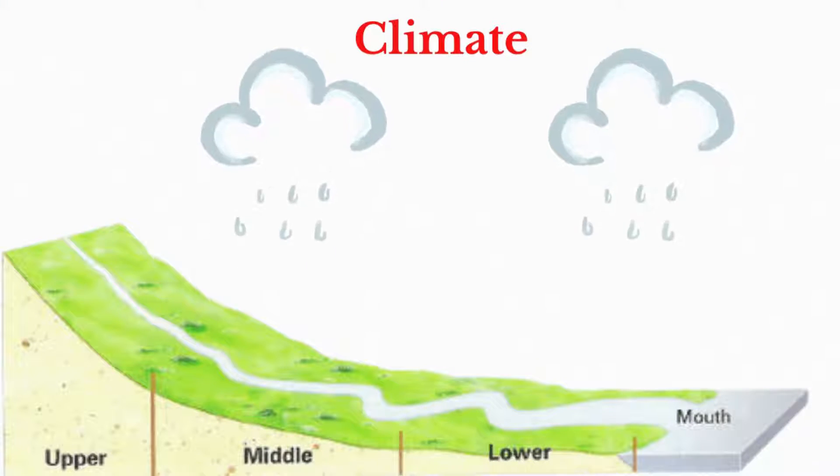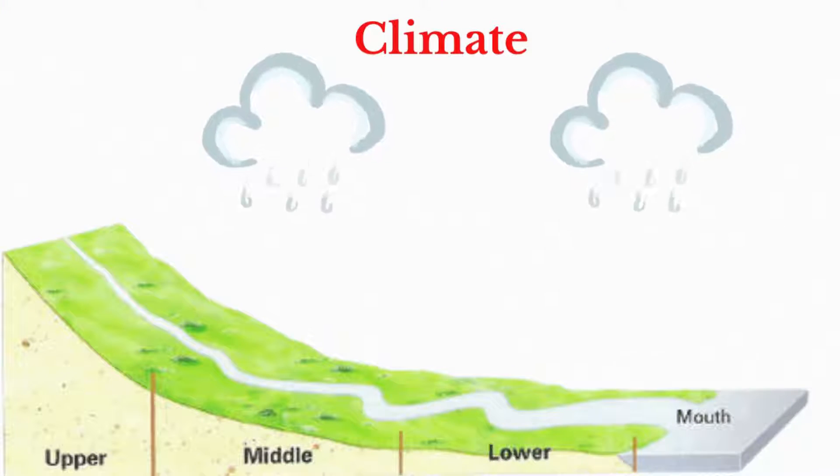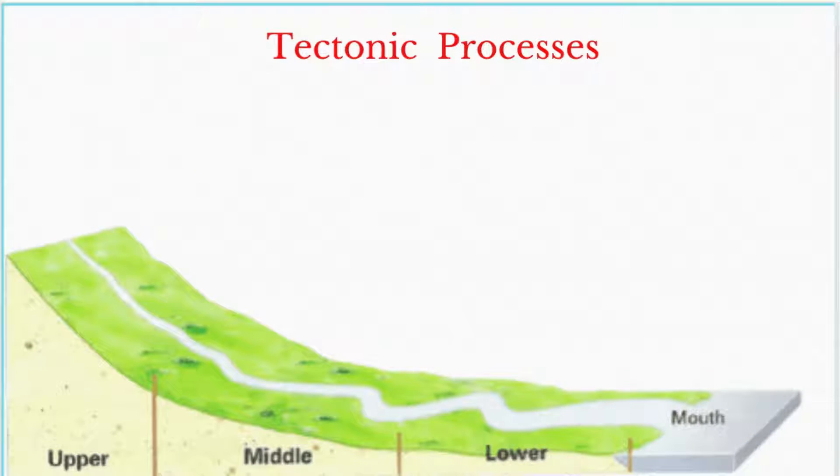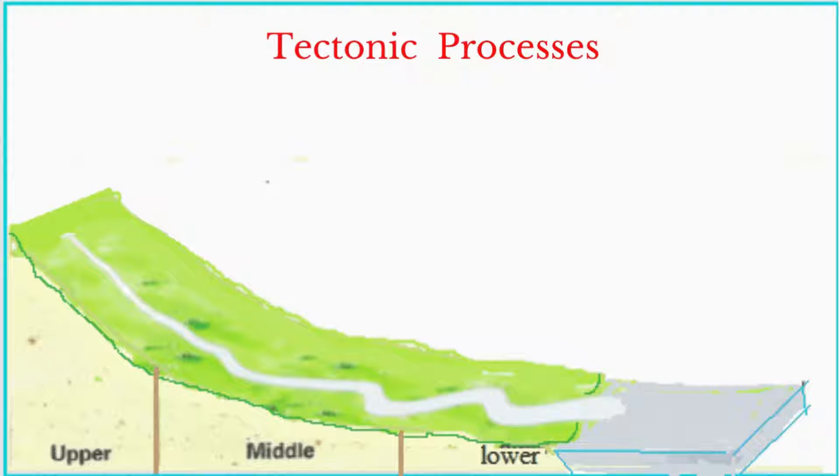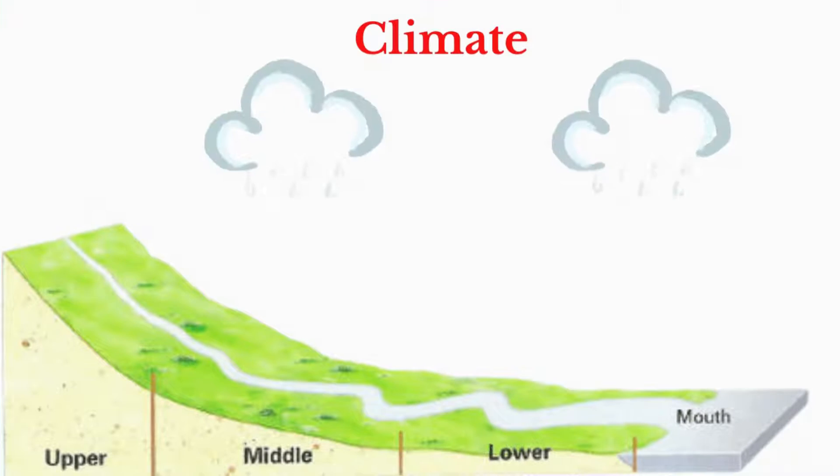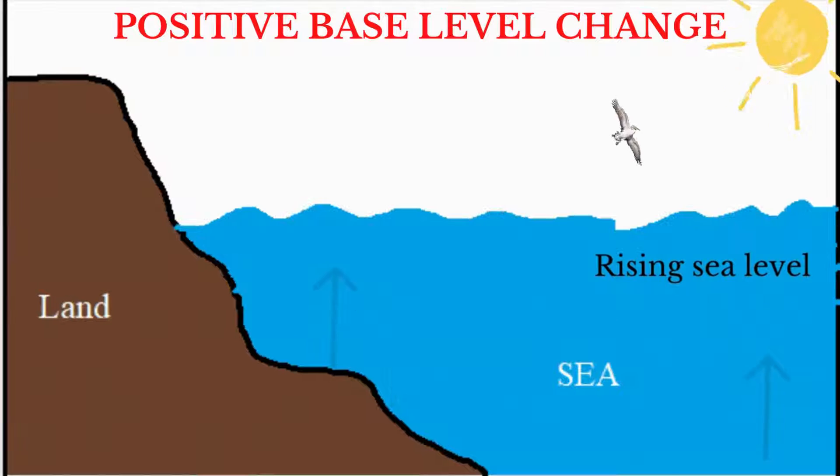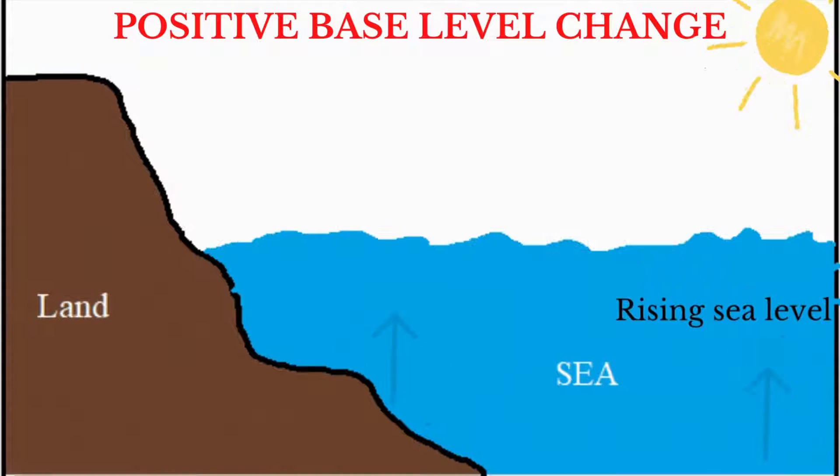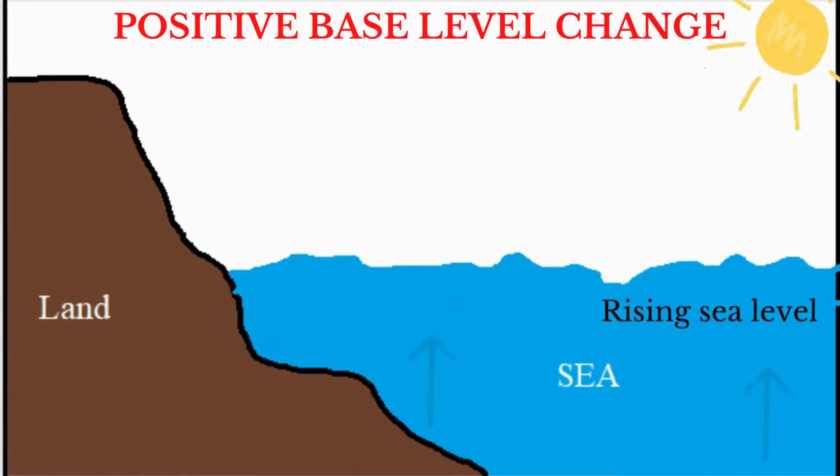Base level can change as a result of two main factors. Climatic factor, which includes the effect of glaciation and changes in rainfall. And secondly, tectonic factors, which include crustal uplift and volcanic activities. We can group base level changes into two categories. So we can talk about positive as well as a negative base level change.